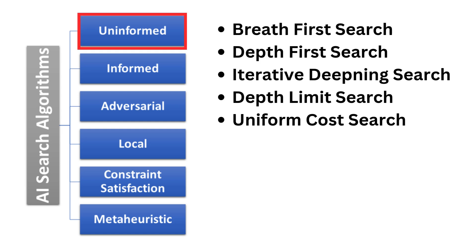In the uninformed searching algorithms, we have breadth-first search, depth-first search, iterative deepening search, depth-limited search, and uniform cost search. In this video, we will explore the first two search algorithms: breadth-first search and depth-first search. In the upcoming lectures, we will discuss the remaining uninformed search algorithms.